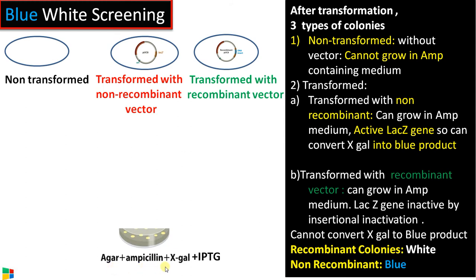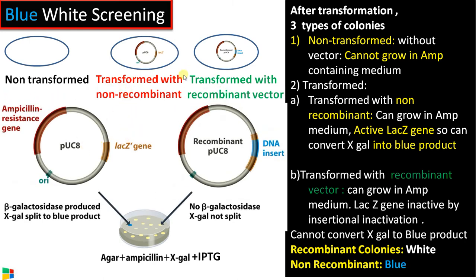For selection, we use a medium that contains ampicillin, X-gal, and IPTG. IPTG is an inducer of the beta-galactosidase gene — it binds to the repressor and favors transcription of the lacZ gene. Non-transformed colonies cannot grow in an ampicillin medium since they lack the vector, so it is easy to eliminate them. In the case of transformed non-recombinant vector, the lacZ gene is intact, so beta-galactosidase is synthesized. Beta-galactosidase converts X-gal into a blue product, so these colonies appear blue.